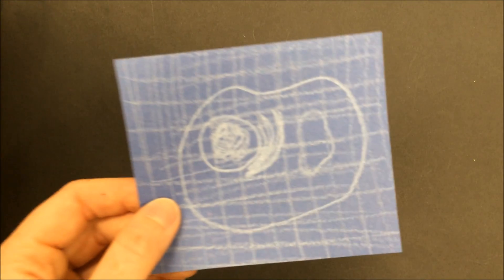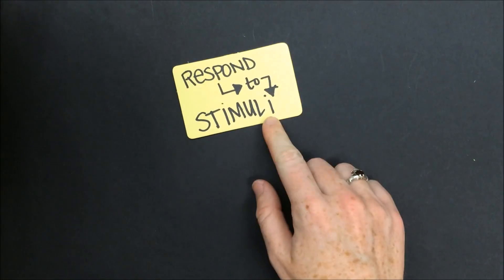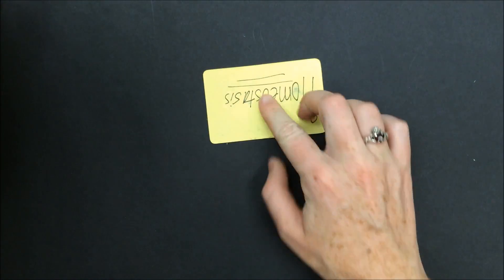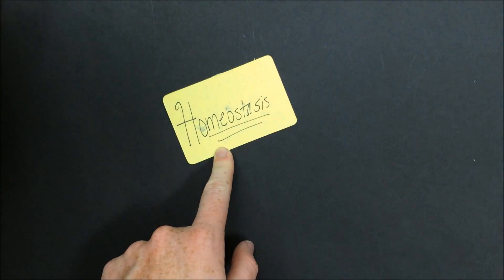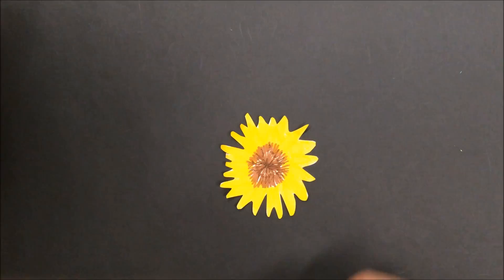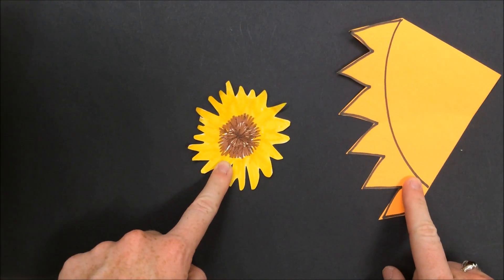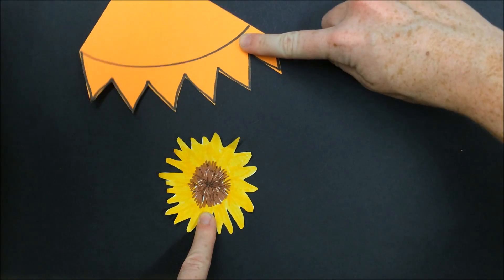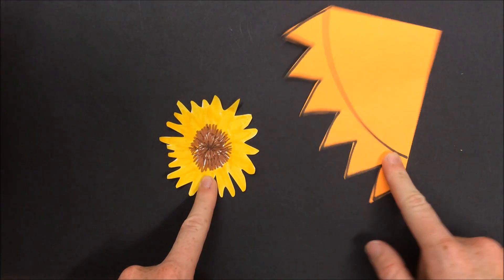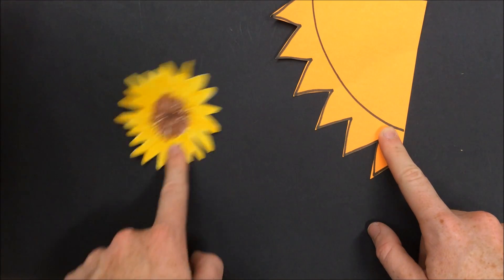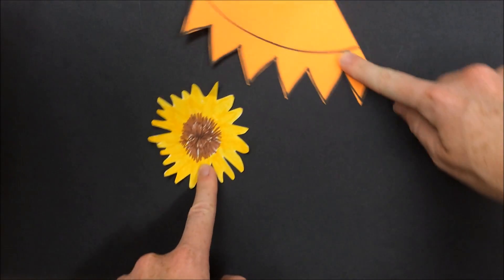All living things respond to stimuli in their environment and do this to maintain homeostasis. One student said that a stimulus was kind of like a cause and the response is kind of like an effect. That might help you remember the difference between a stimulus and response. For example, a sunflower will turn so that it is facing the sun no matter where the sun is in the sky. In this case, the sun acts as the stimulus and the response is the sunflower turning so that it can always face the sun.